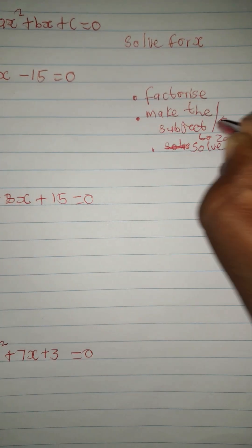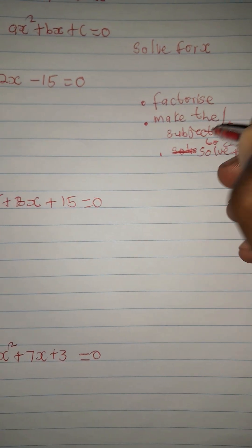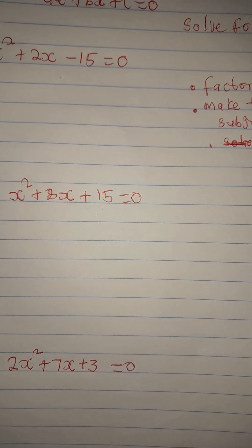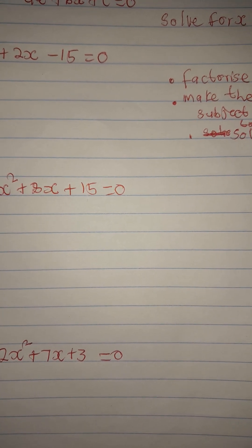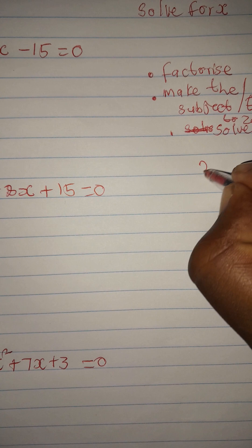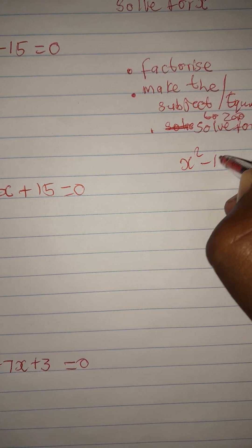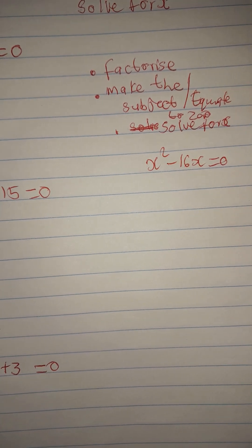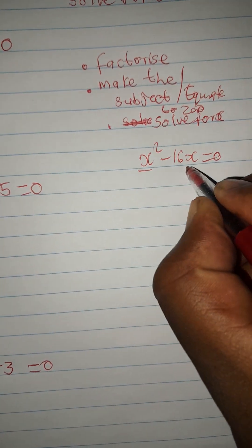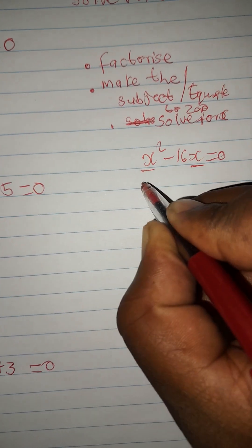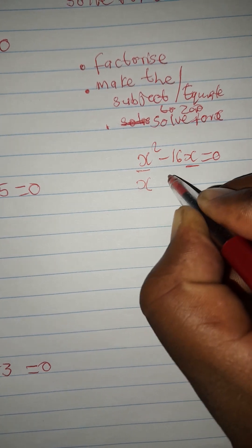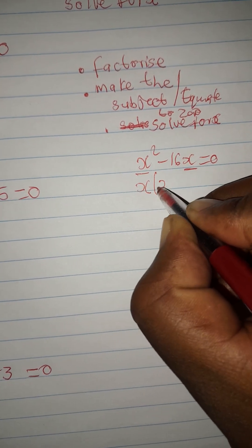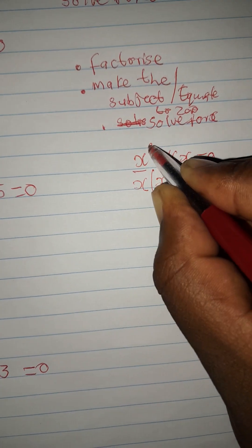If there's a common factor, there are equations that have a common factor. For instance, if you're given x squared minus 16x equated to zero, there's a highest common factor, which is x. You have to factor out by taking out x. When you take out x, you are left with x, because x times x is x squared.